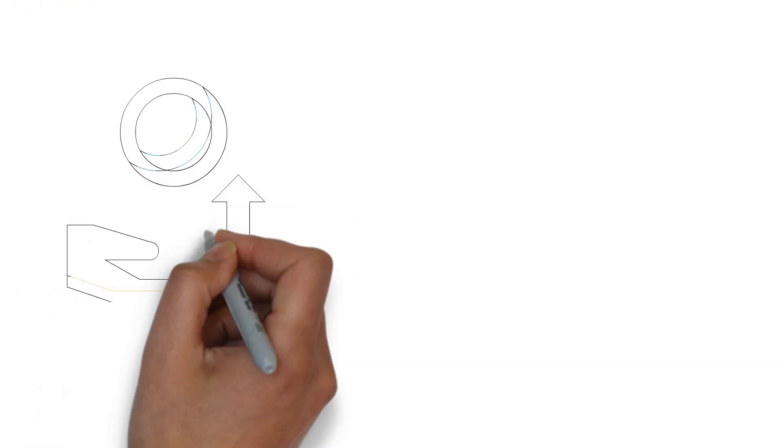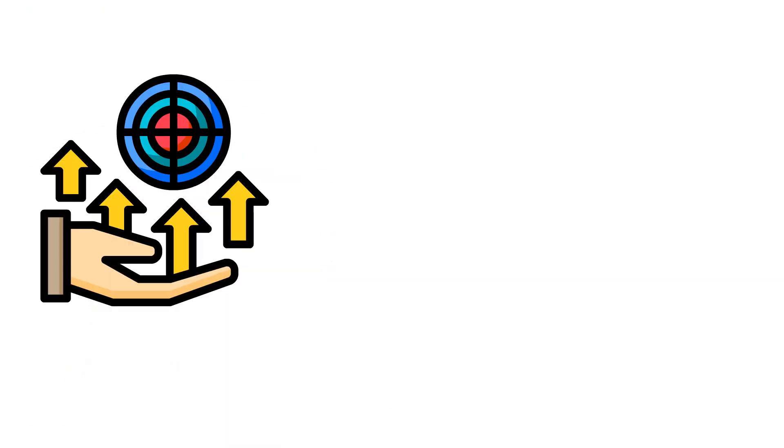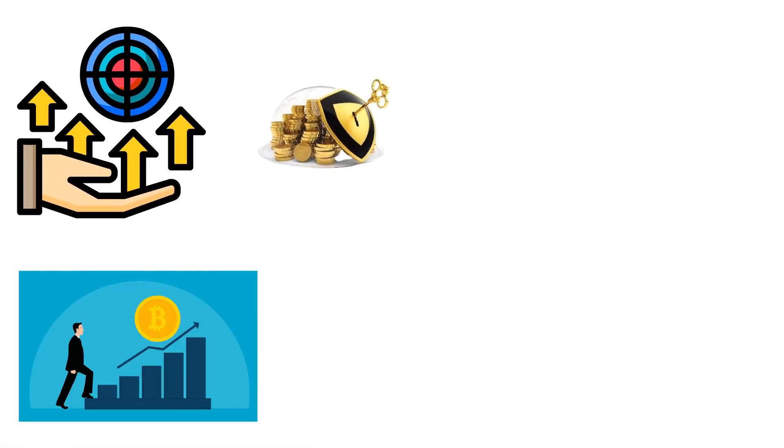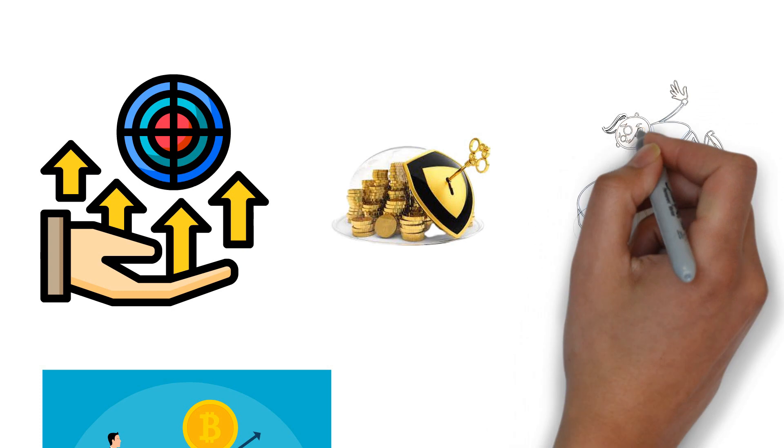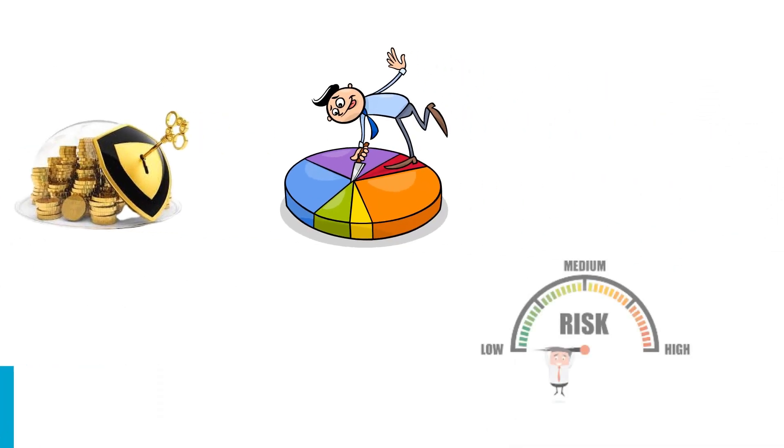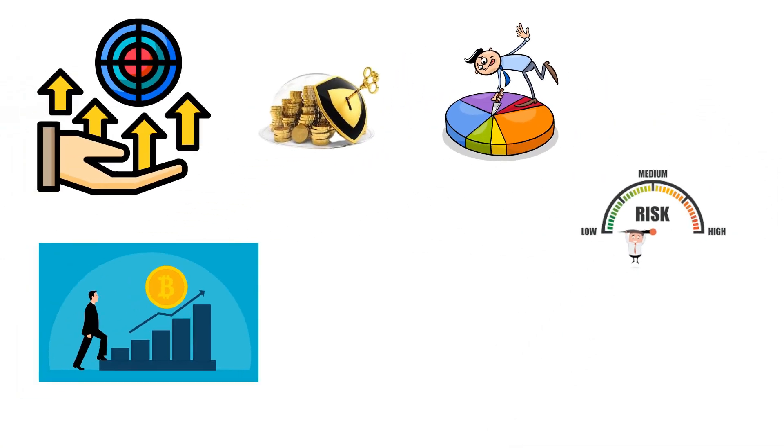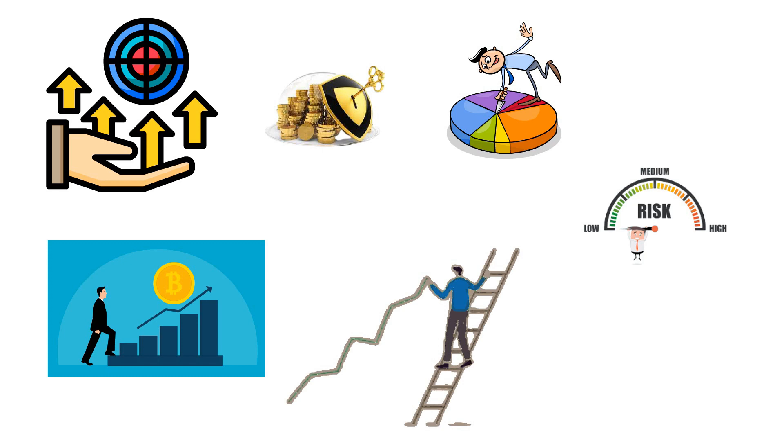The multiple income rule is a vital strategy that the wealthy use to protect their finances and maximize their earning potential. By diversifying your income streams, you can reduce your financial risk, increase your profits, and pave the way for long-term financial success.